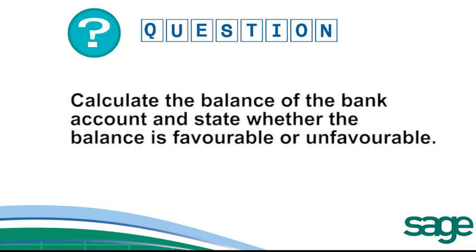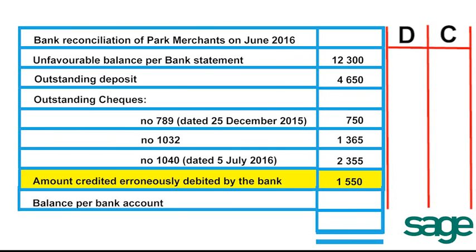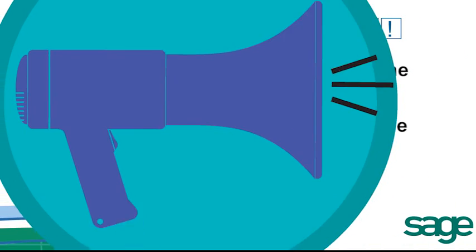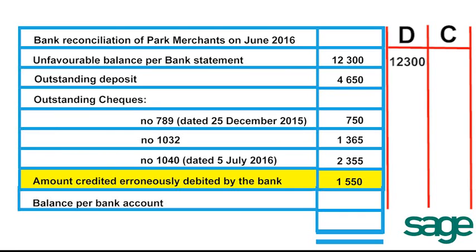The next question asks us to calculate the balance of the bank account and state whether the balance is favourable or unfavourable, considering the bank error when calculating. We can calculate the correct balance by putting the transactions into the correct columns — debit or credit. Remember, an unfavourable balance as per the bank statement will be in the debit column, and a favourable balance as per the bank statement will be in the credit column. Our unfavourable balance is recorded in debit, the outstanding deposit we credit, the stale cheque we leave out as it was not supposed to be here, both of the following cheques are debited, and the wrongfully debited amount is now credited.